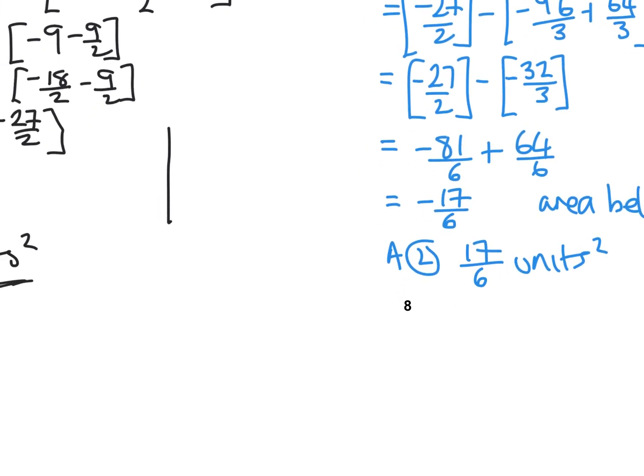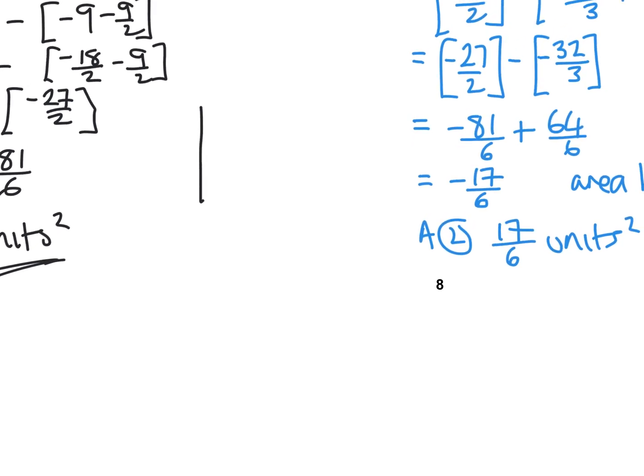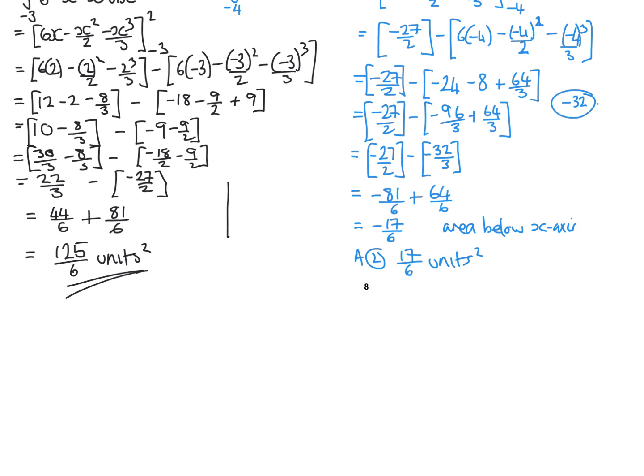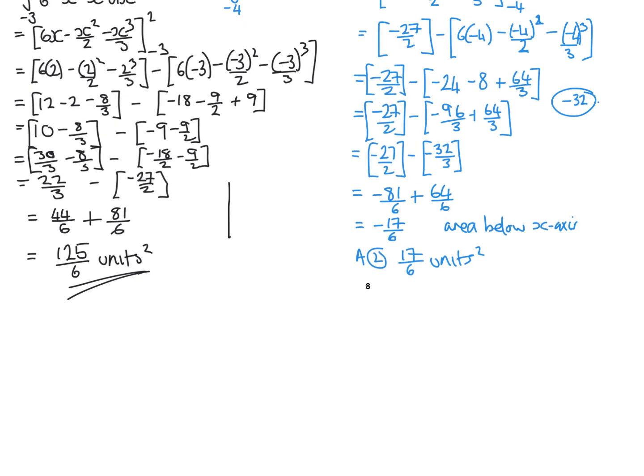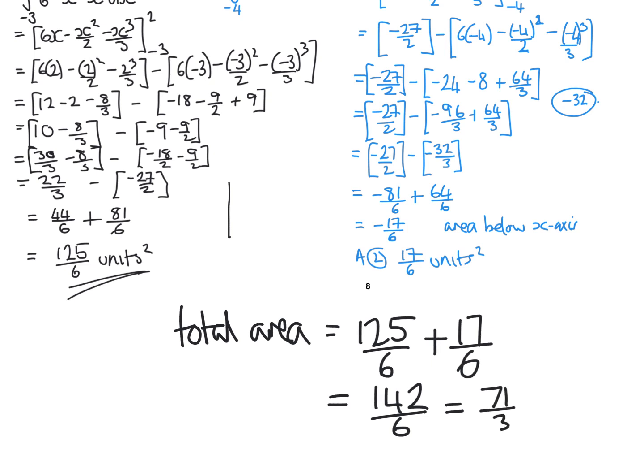And all that's left to do now is get my total. So I can do this down here. I can just zoom a little bit. So we can see all this working. So my total was now, back to my black pen. So the total area was 125 over 6 plus 17 over 6. Which is 142. Oh, mine's gone completely blank. So that would be 142. Take away 3 is 142 over 6. Now this does simplify. That would go down to 71 over 3 units squared.